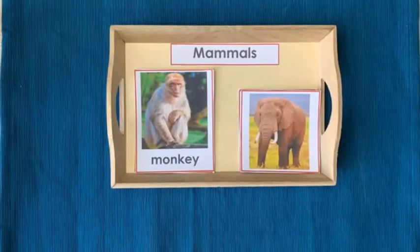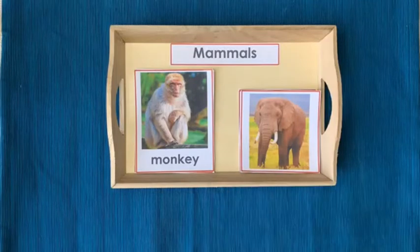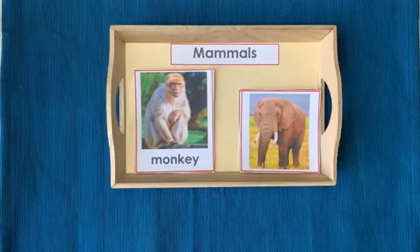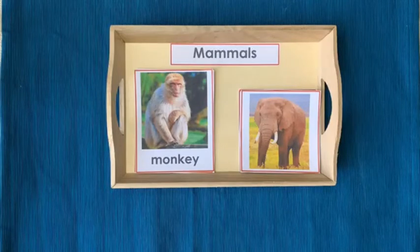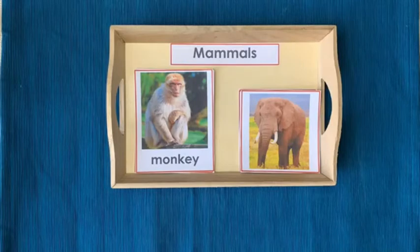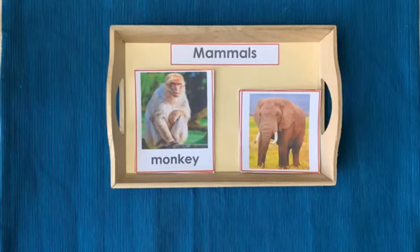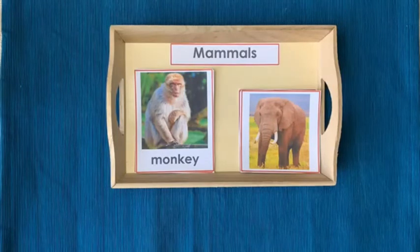Welcome to Euphoria Learnings. Today we are going to look at some classification cards for mammals. This activity introduces new vocabulary to the child, develops the child's interest in wildlife and nature, and draws the child's attention to the specific features of mammals. This activity is a demo on how to introduce these cards to the child. You can download these cards through the link below in the description.